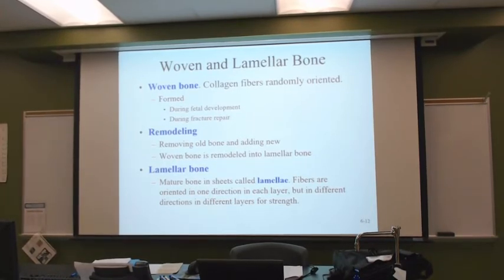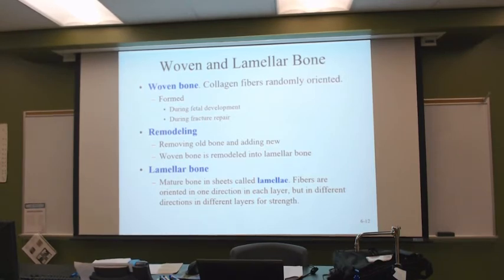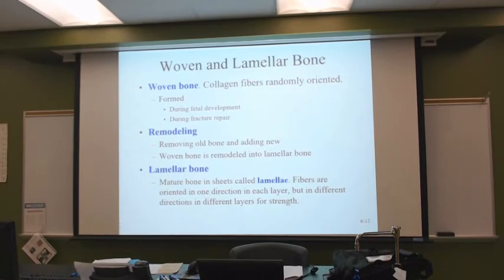Babies are mostly cartilage, and then they have to grow. As they grow, bone begins to replace that cartilage. When we say woven bone, that's in relationship to the way the collagen looks — going one direction. That occurs during fetal development, and also if the bone needs to repair from a fracture.